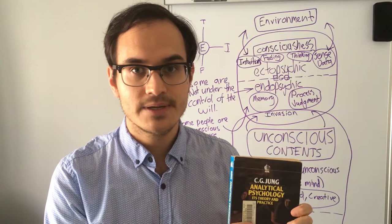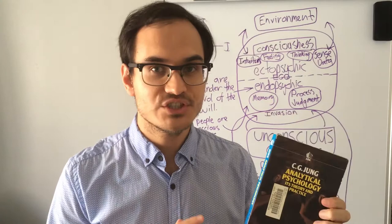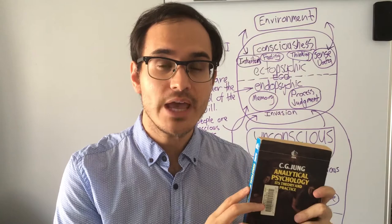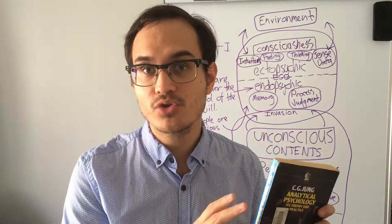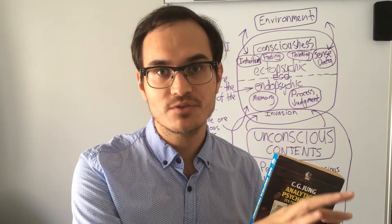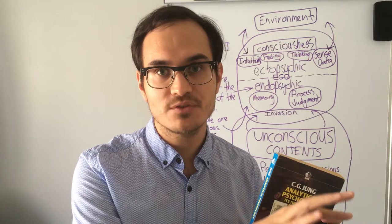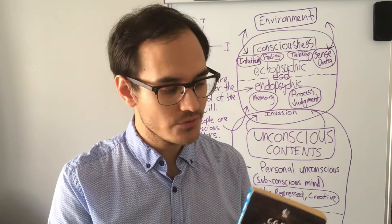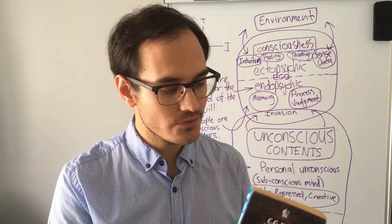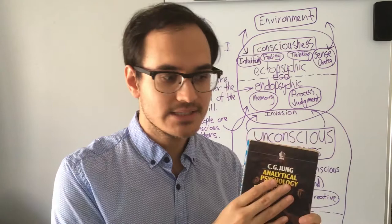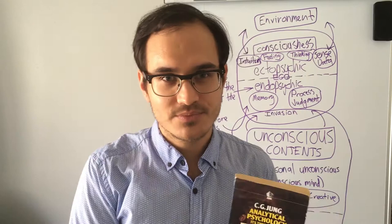I'd also just mention that these five lectures are known as the Tavistock Lectures and they're part of Volume 19 of Carl Jung's Collected Works, which is called 'The Symbolic Life.' In 'The Symbolic Life' there's basically a whole bunch of miscellaneous writings from Jung, and the Tavistock Lectures fit into that collection. This book has just taken those five lectures and put them together.